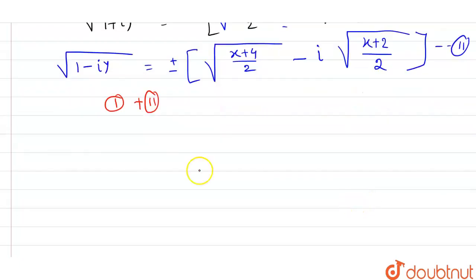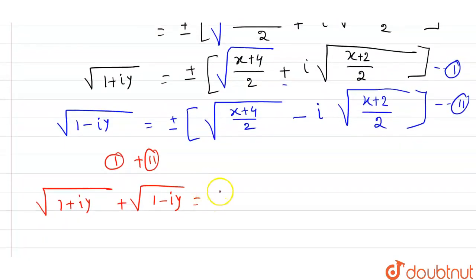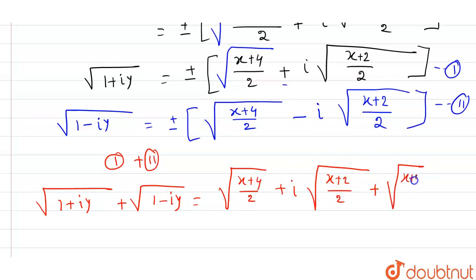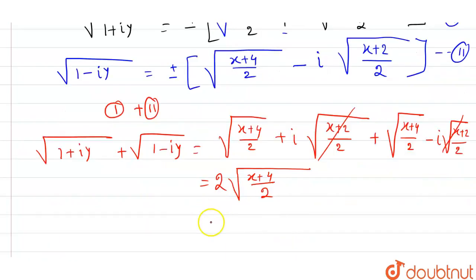Root of (1 + i·y) plus root of (1 − i·y) equals: [root of (x+4)/2 plus iota·root of (x+2)/2] plus [root of (x+4)/2 minus iota·root of (x+2)/2]. The iota terms cancel, leaving 2·root of (x+4)/2, divided by root 2.